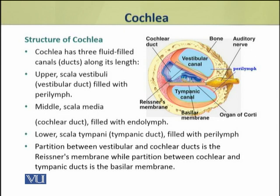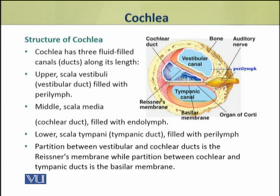We shall discuss the structure of cochlea in detail. The cochlea has three fluid-filled canals or ducts along its length. These include first the upper scala vestibuli, or vestibular duct, which is filled with perilymph. The second is the scala media, which lies in the middle, also called cochlear duct, filled with endolymph. The third lower duct is called the scala tympani, or tympanic duct, and it is filled with perilymph.